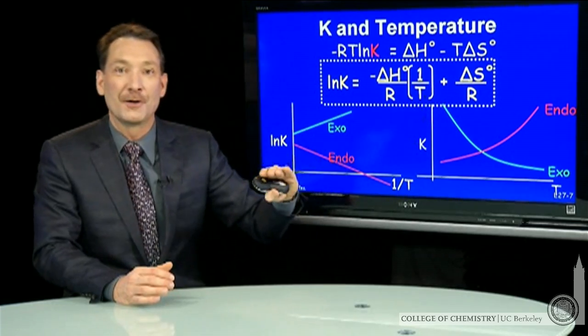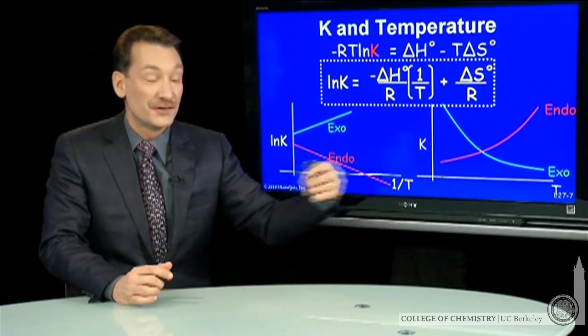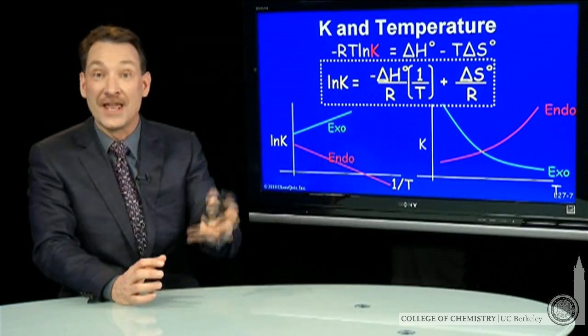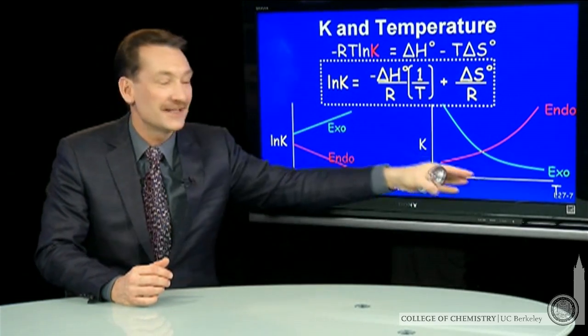For exothermic chemical reactions, heat is a product. So as I add heat, I start to favor reactants. K gets smaller.